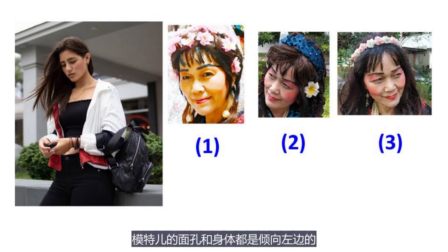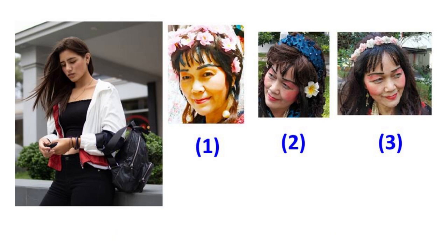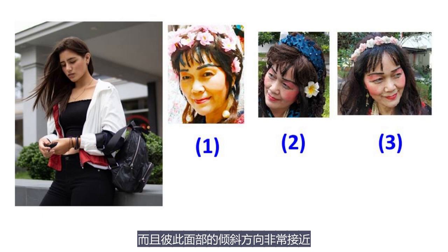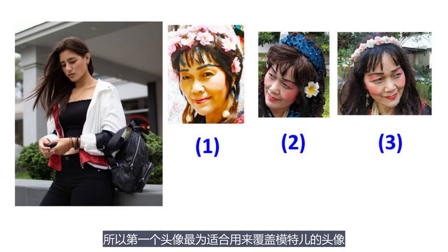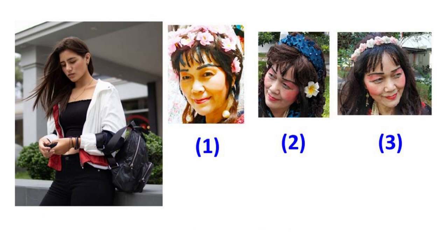从图片中你可以看到，模特儿的面孔和身体都是倾向左边的。而第一个头像中，我的面孔也是倾向左边的，而且彼此面部的倾斜方向非常接近，所以第一个头像最为适合用来覆盖模特儿的头像。